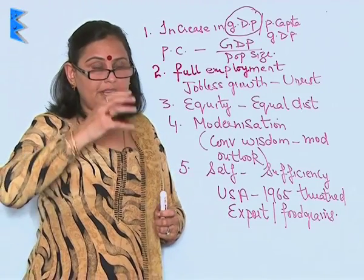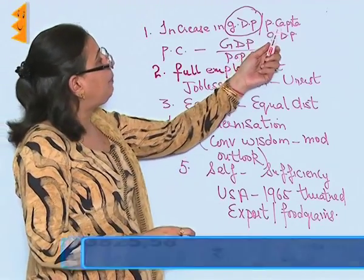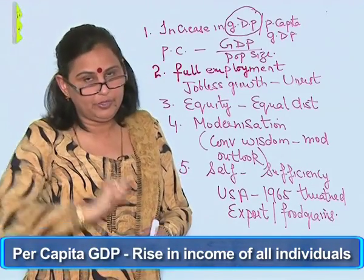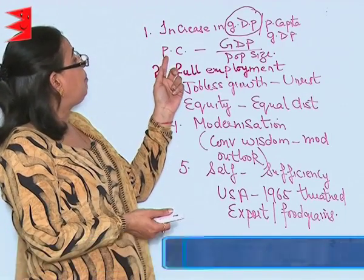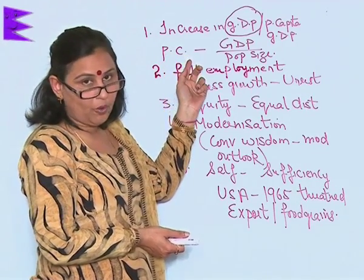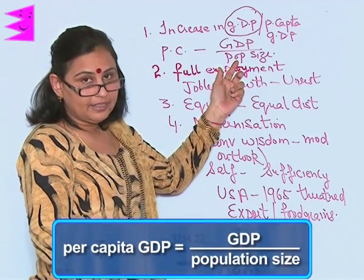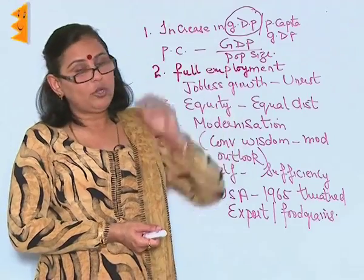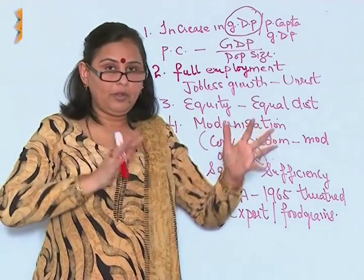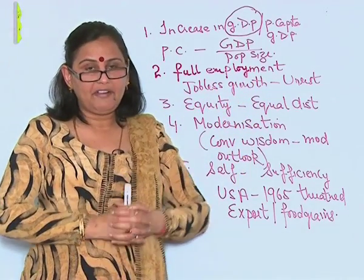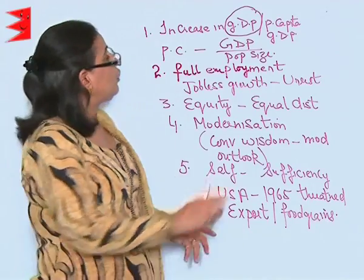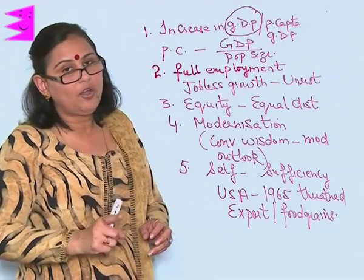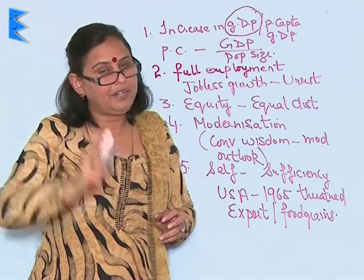That is, the economy is becoming strengthened. And per capita GDP means the rise in income of all individuals. The per capita GDP is calculated as GDP divided by the population size. It should not happen that the GDP of a country increases but the population is also rising, or there are people who are becoming very rich while others find it very difficult to sustain. So, increase in GDP and per capita GDP is the real essence of economic growth.